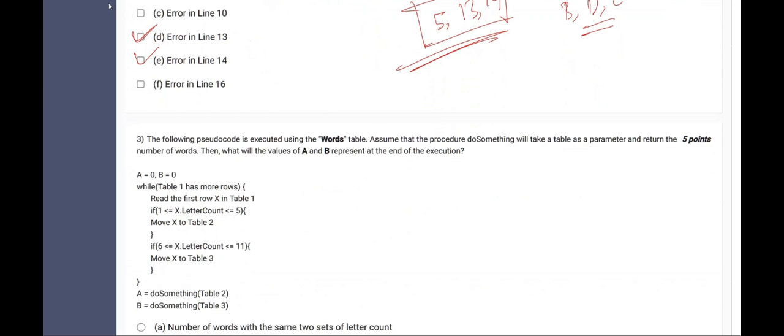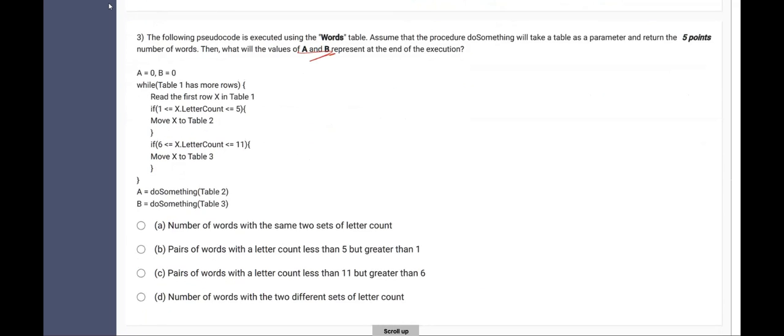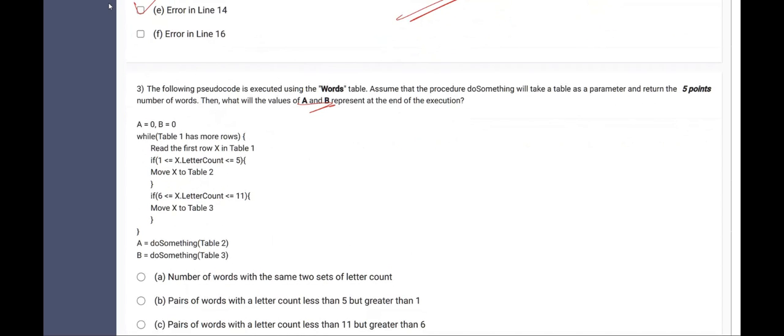The following pseudo code is executed using words in this table. Assume that the procedure do something. What does do something do? It will take table as parameter and return the number of words. Then, what will be the values of a and b? The values of a and b will be for that. We will have to see what a and b do. A is something other than the return value of do something table 2 and b is do something table 3. So, what does table 2 and table 3 contain? These are 2 separate tables.